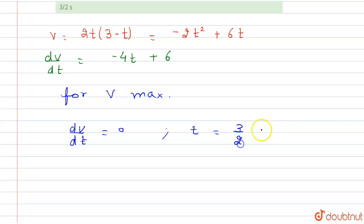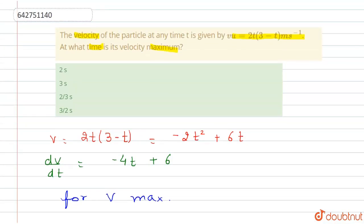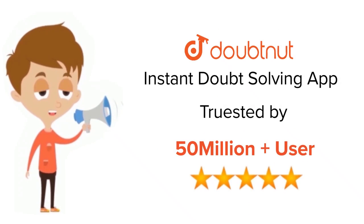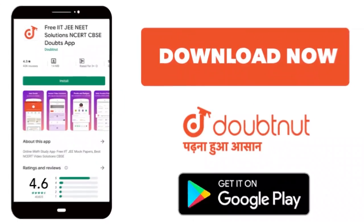So time is 3/2 seconds. So fourth option is correct, 3/2 seconds. At this time the velocity is maximum. Thank you. For class 6 to 12th, IIT and NEET level, trusted by more than 5 crore students, download Doubtnet app today.